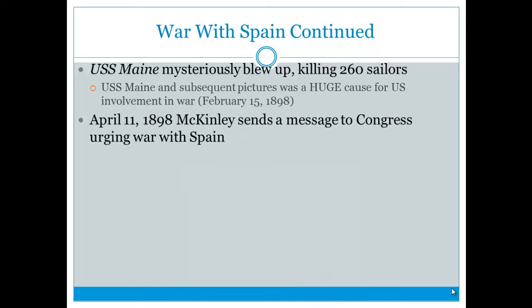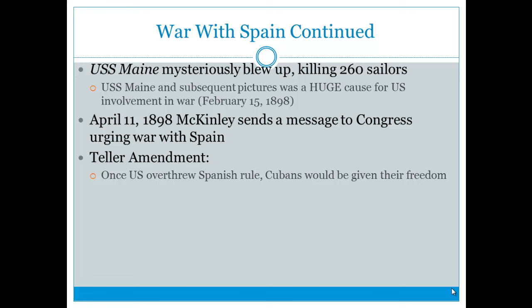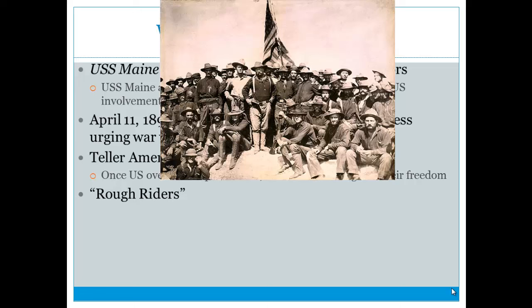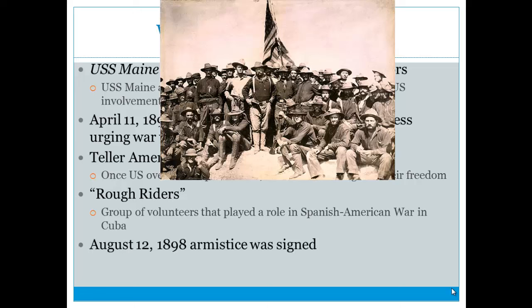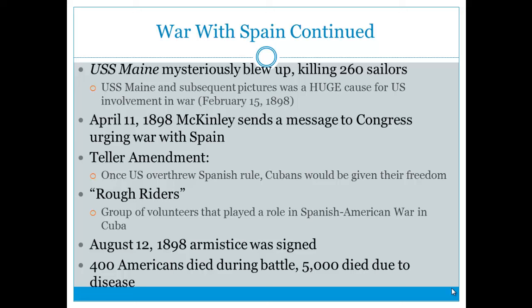On April 11th, 1898, McKinley sent a message to Congress urging war with Spain. The Teller Amendment promised Cuba freedom once the Spanish were overthrown. The Rough Riders, led by Teddy Roosevelt, played a key role in the fighting in Cuba. On August 12th, 1898 — just four months later — the armistice was signed. During the war, 400 Americans died in battle, but 5,000 died from disease. Definitely know that more died from disease than combat.